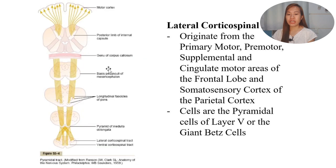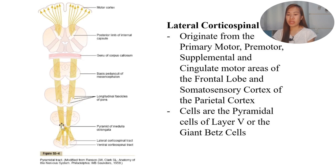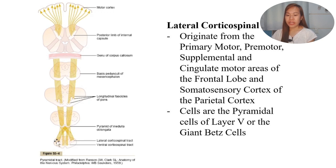This picture shows the lateral corticospinal tract. From the left and right motor cortex, it will pass through the posterior limb of the internal capsule, then through the genu of the corpus callosum, through the basis pedunculi of the mesencephalon, to the longitudinal fascicles of the pons, and to the pyramid of the medulla oblongata - that's why it's called the pyramidal tract. There will be decussation, crossing over, with fibers from the left going to the right lateral corticospinal tract. After the pyramids, that is where the decussation of fibers occurs.